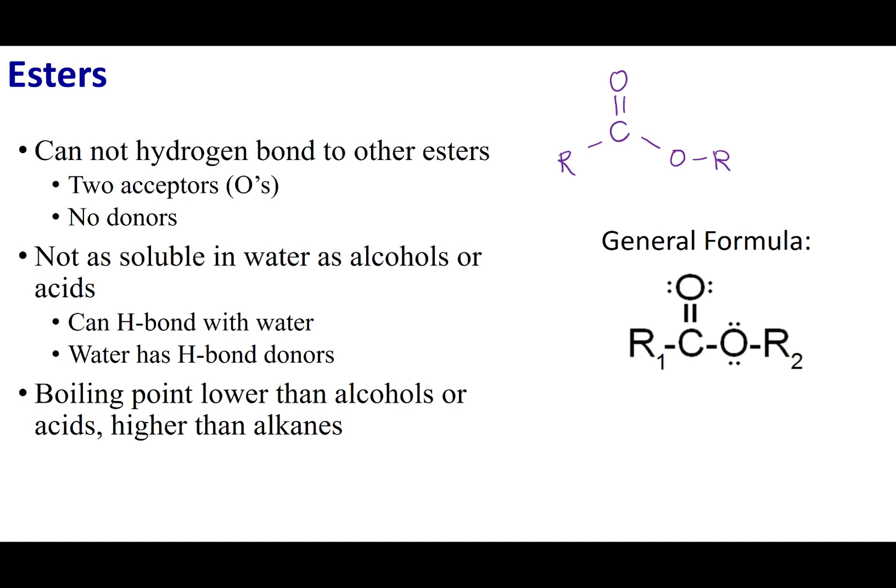Esters don't have any hydrogens attached to a super electronegative atom, so esters cannot hydrogen bond with themselves. But even though there's no donor hydrogen, there are two acceptors. So if something that can donate hydrogen bonds — like water — is present, esters can participate in hydrogen bonding. This puts them in a similar range as aldehydes and ketones: soluble in water, but not as well as acids or alcohols. And because they lack those self-hydrogen bonds, they have higher boiling points than alkanes, but not as high as alcohols or acids.